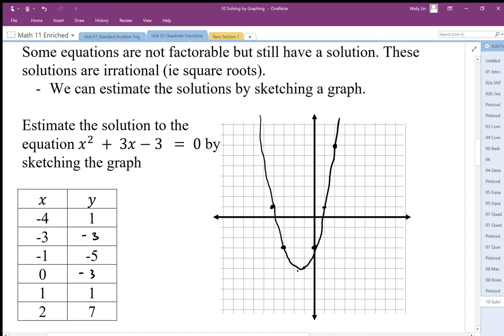We can estimate that our solution to this equation then equal to 0 can be found somewhere around here. Somewhere around maybe negative 3.9, somewhere around there, maybe positive 0.9. Now these are just estimates, but we can see that where the graph crosses the x-axis we can get our solution.